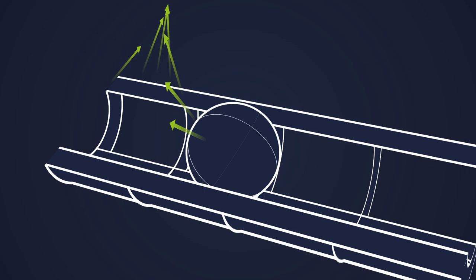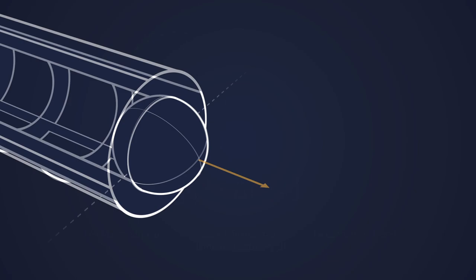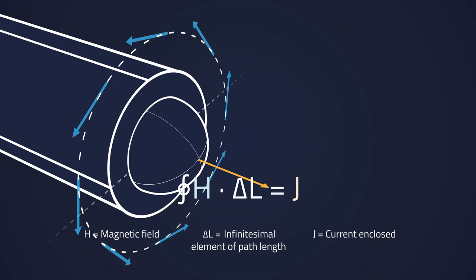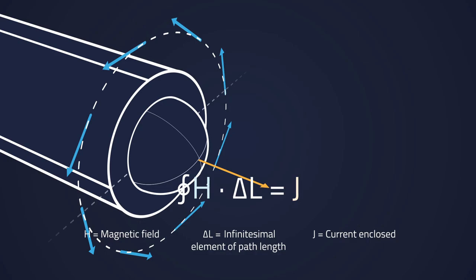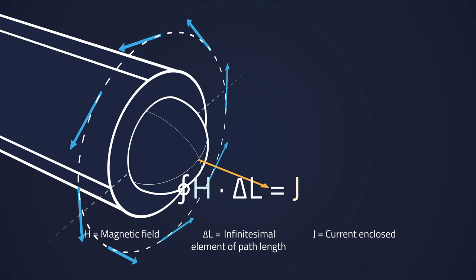Electric field lines travel from a negative charge to a positive charge, so they have a starting and an ending point. Magnetic field lines, however, form a closed path around a current carrying conductor. Electric and magnetic field lines are set perpendicular to another.